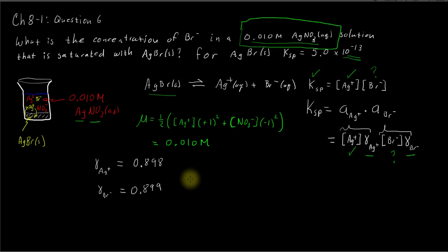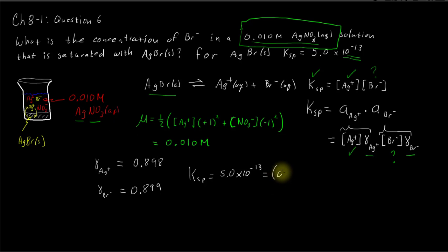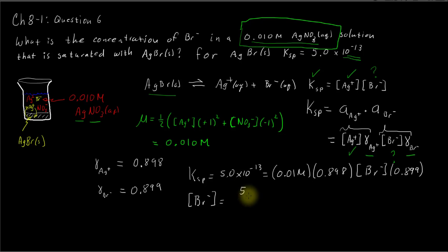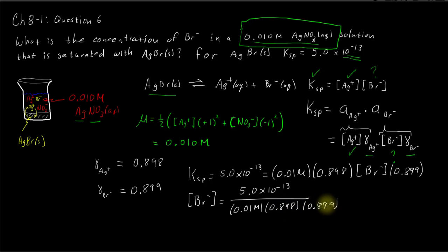Now we substitute those values into our Ksp expression and solve for the unknown. Ksp equals 5.0 times 10 to the negative 13, and that equals the silver ion concentration — 0.010 molar, from the one-to-one stoichiometry — times the silver ion activity coefficient 0.898, times the bromide concentration (what we're solving for), times the bromide activity coefficient 0.899. We rearrange algebraically: the bromide concentration equals Ksp divided by (0.010 × 0.898 × 0.899).